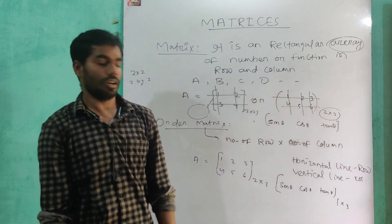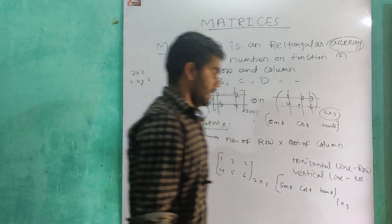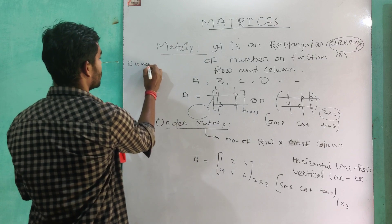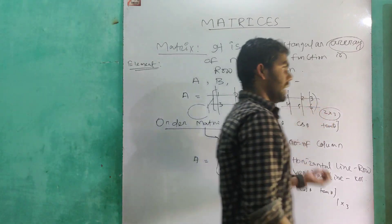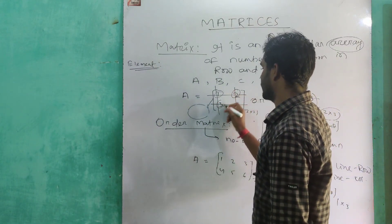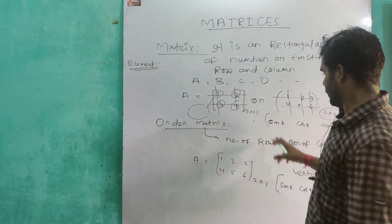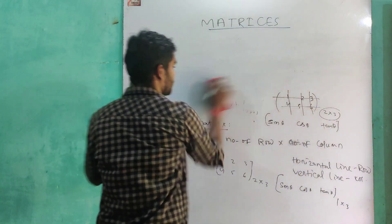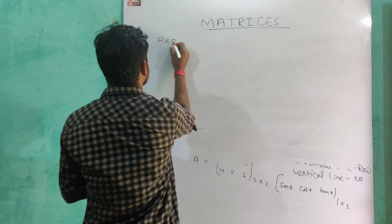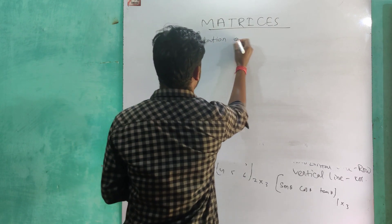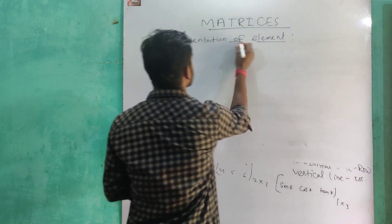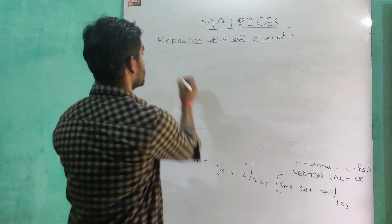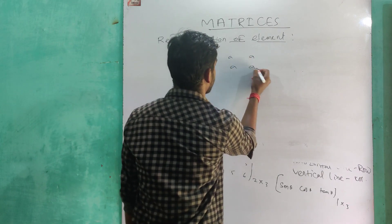Here the order is 1 by 3, or 1 into 3. Now let us look at the representation of elements. The representation of elements means the address of each element in a given matrix, denoted as a-sub-ij, where i represents the row number and j represents the column number.